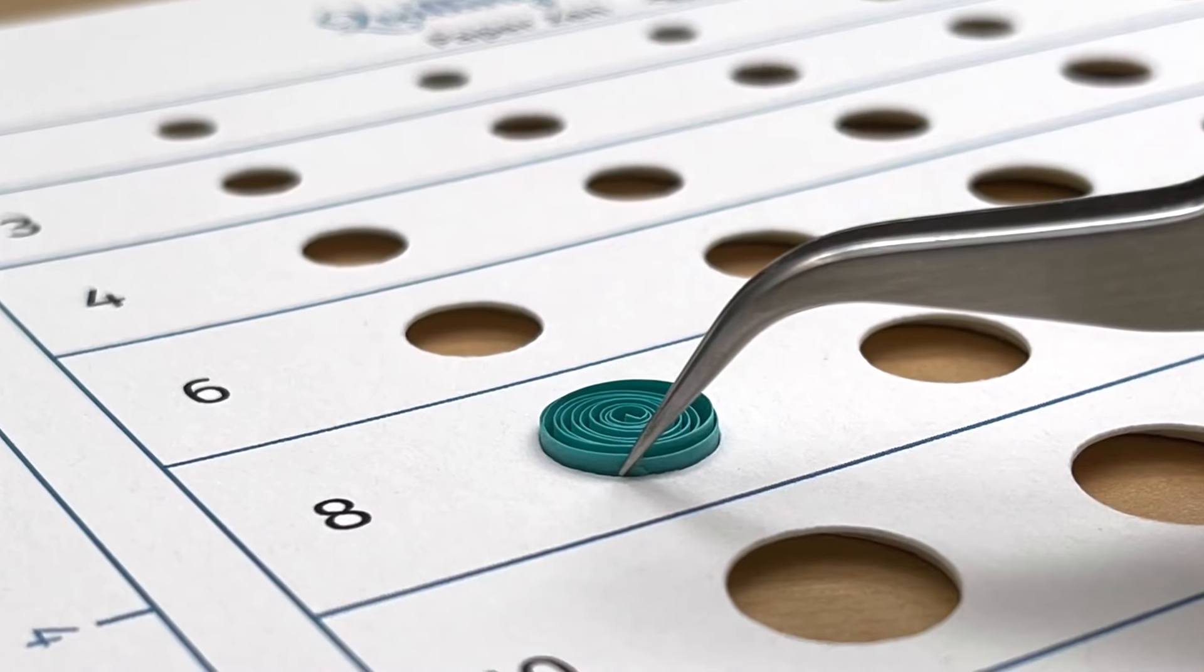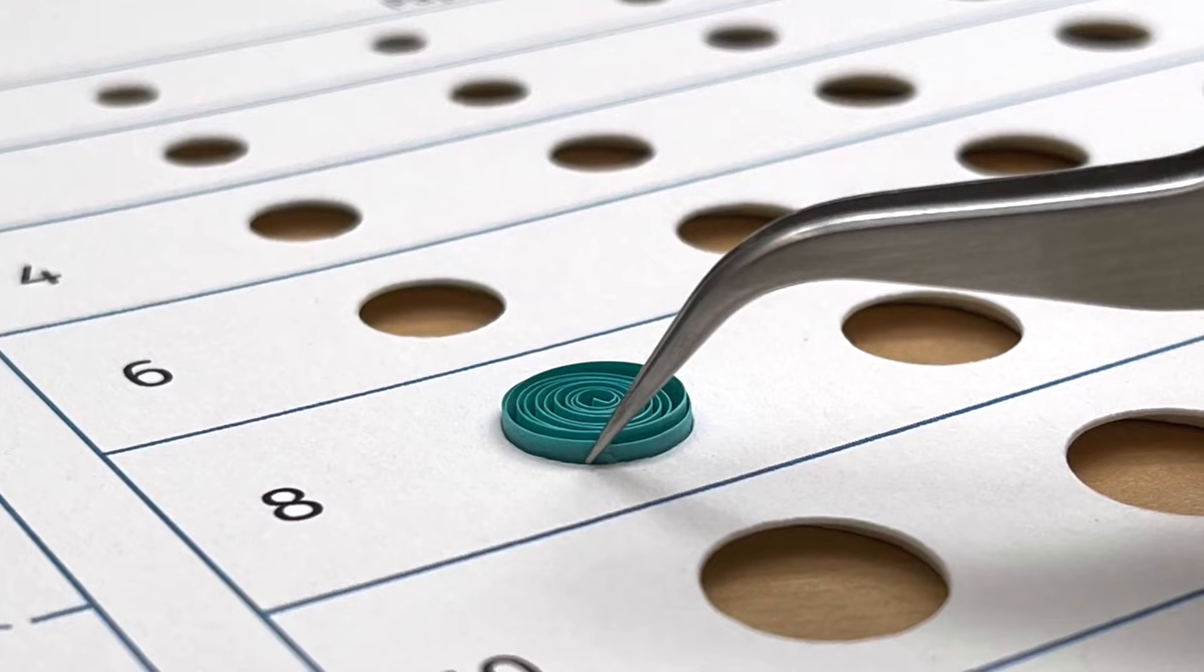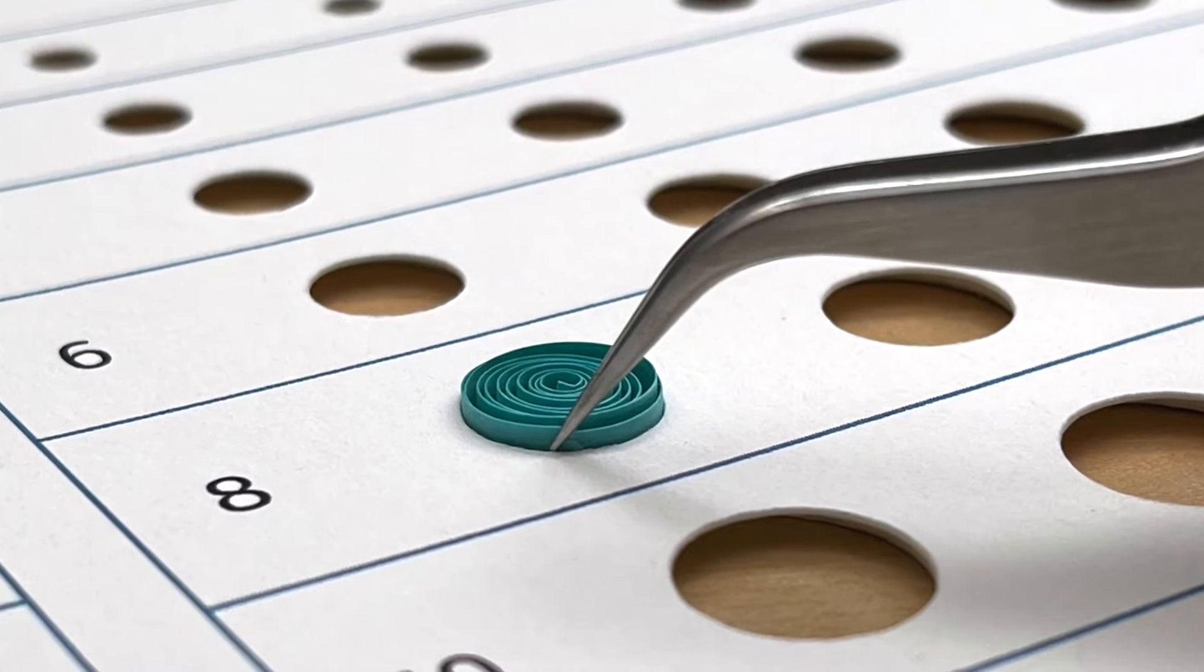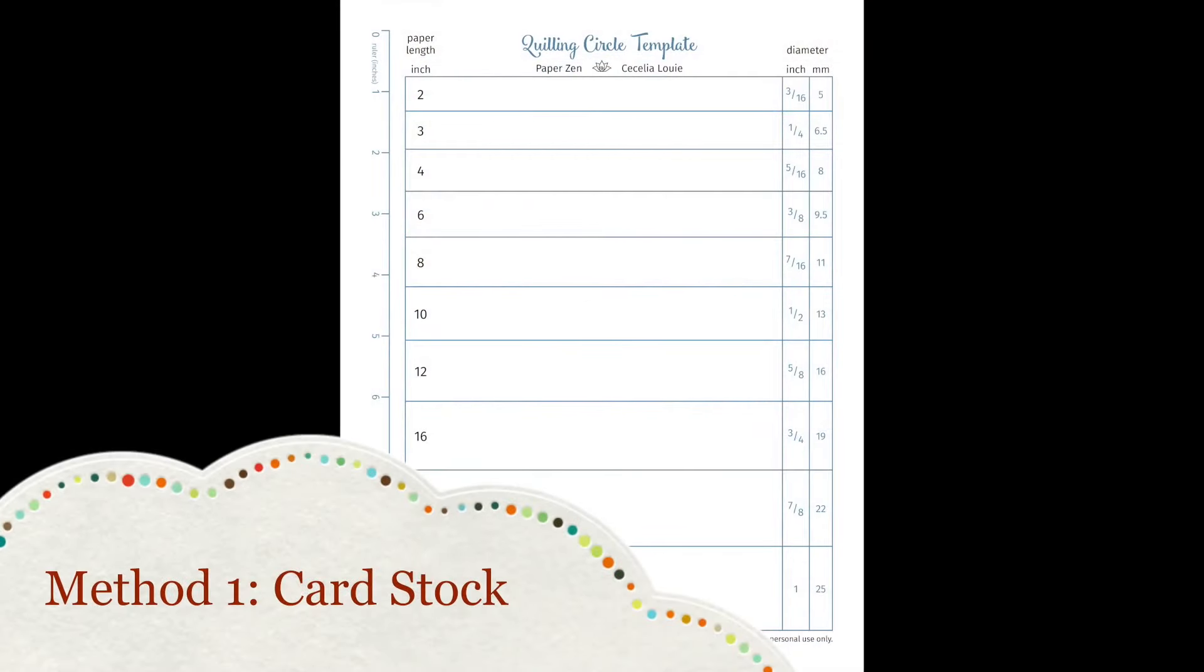When you allow your coil to unwind, it's only going to touch a single layer on the top. Now that I've explained how the files work together, let me show you the making of method one, cutting a circle template with cardstock.